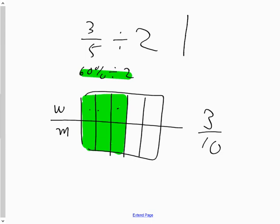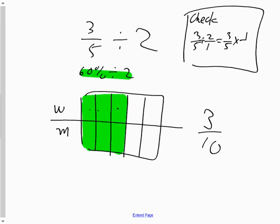If you wanted to check your work, the word check up here. Three fifths divided by two. Divided by two is the same thing as three fifths multiplied by the reciprocal of two, which is one half. And when I multiply that, I end up getting three tenths is my answer.